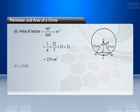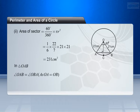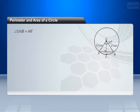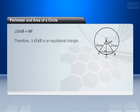In triangle OAB, we observe that angle OAB equals angle OBA, since OA equals OB. And we know that the sum of angles of a triangle is 180 degrees. So we have angle OAB plus angle AOB plus angle OBA equals 180 degrees. This implies that 2 angle OAB plus 60 degrees equals 180 degrees. This implies that angle OAB equals 60 degrees. Therefore, triangle OAB is an equilateral triangle.